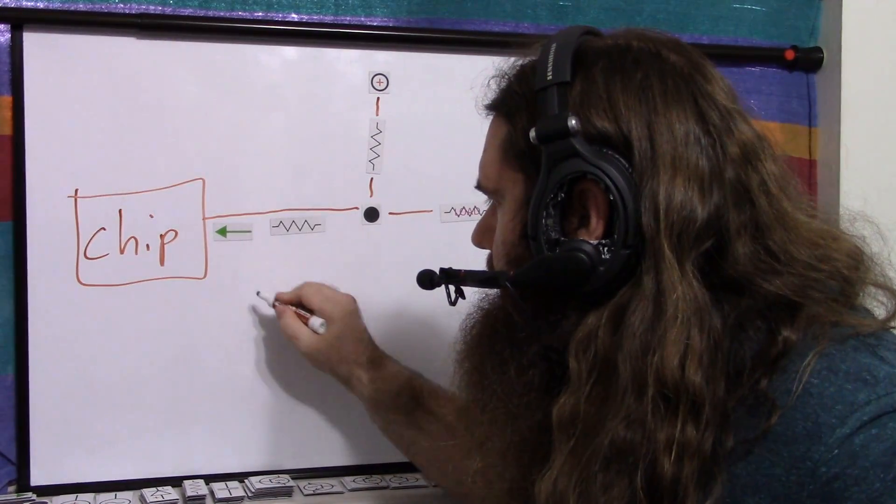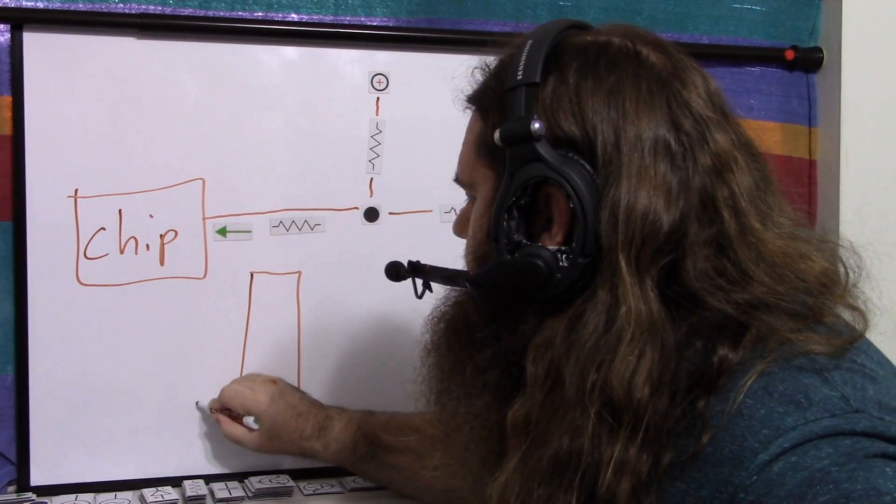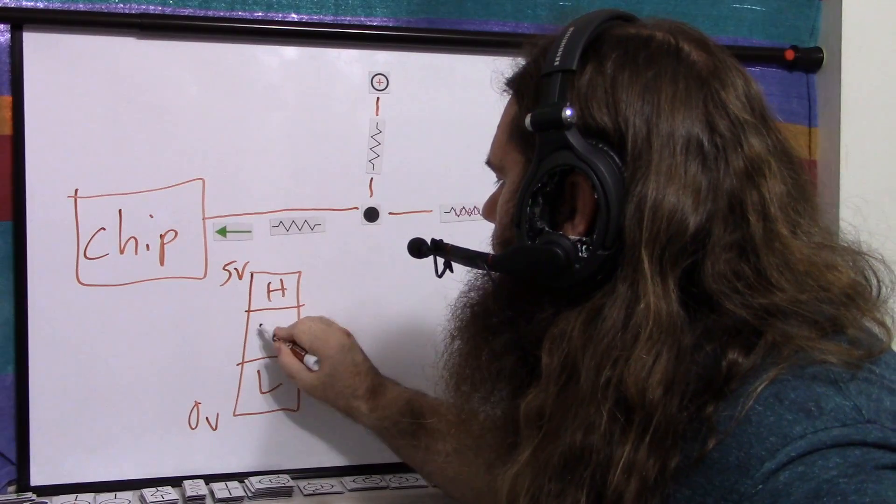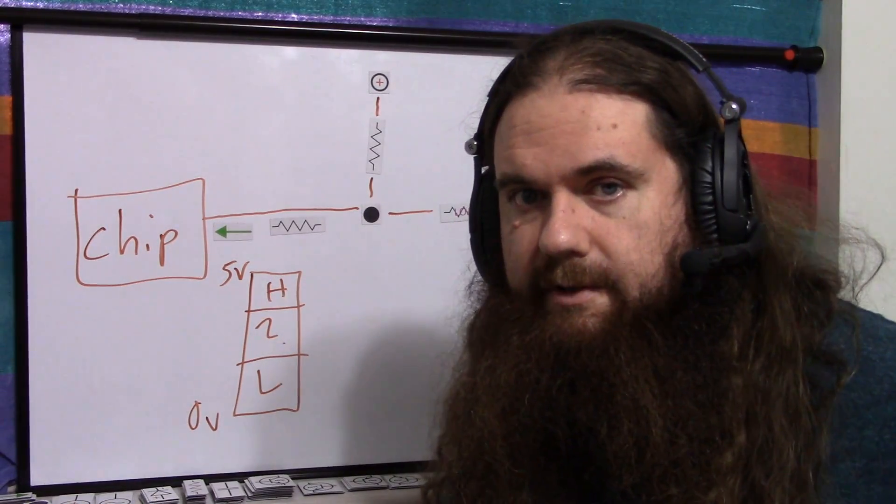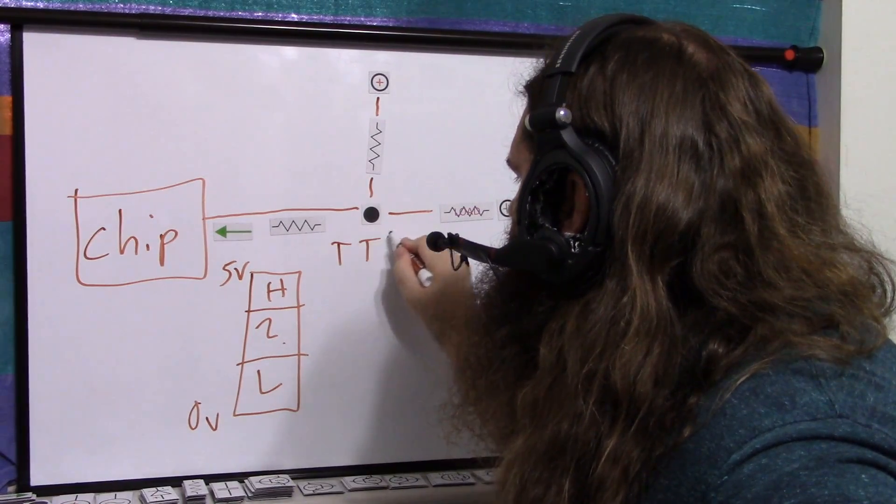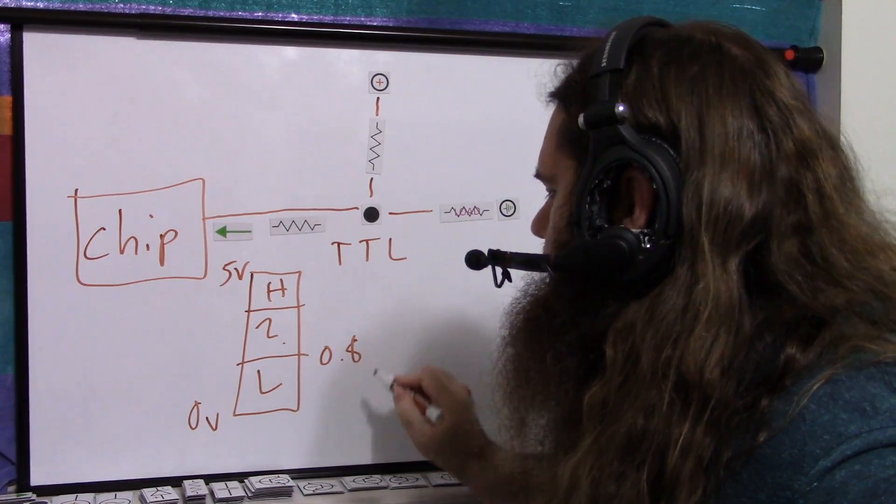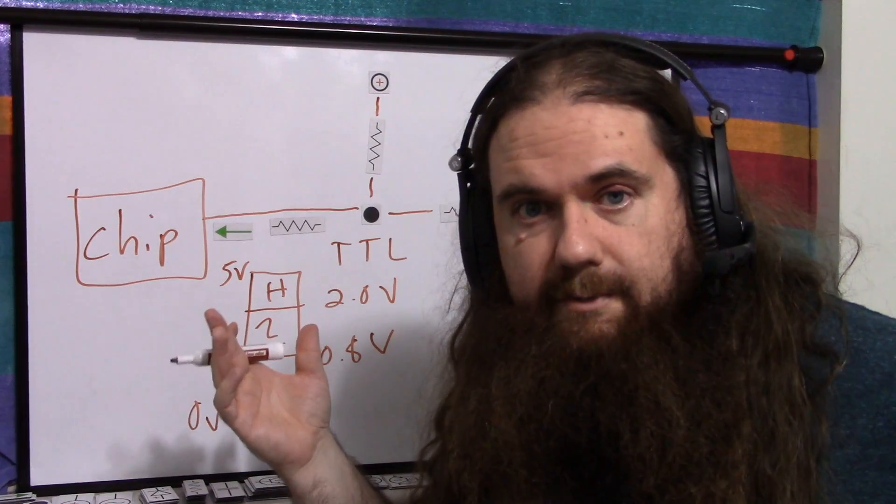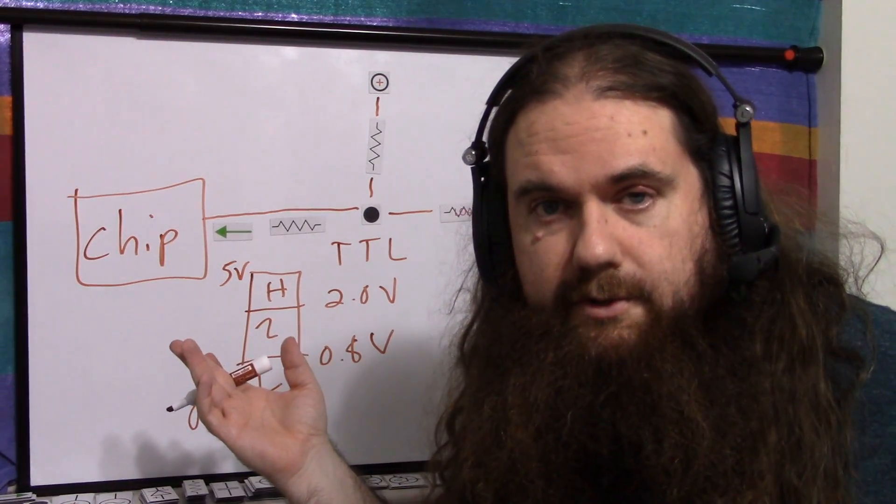I've said before that you have a voltage range, let's say 0 volts to 5 volts, where you've got low, high, and unknown, the indeterminate range. For TTL, the low starts at 0.8 volts, and the high starts at 2.0 volts, and some chips will not put out much more than 2.0 volts.